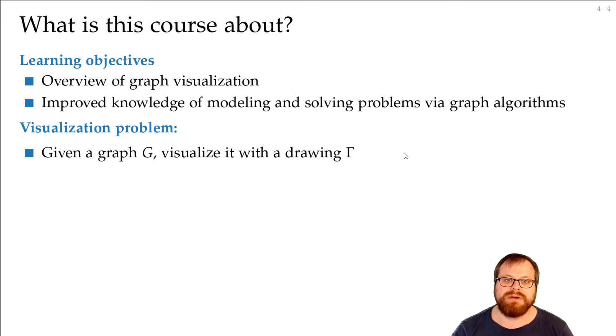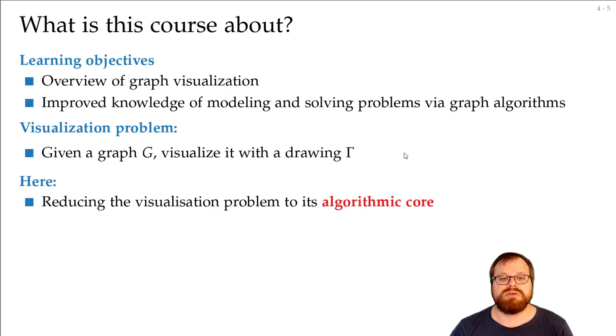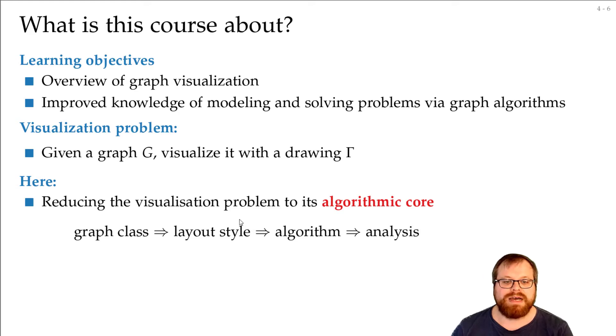This is not so clear. There are many different styles and many things you want to do. We want to have a look at 10, 11, 12 of them in this course. We want to reduce this visualization problem to the algorithmic core. We have some graph class, some specific graphs, we have some layout style, and then we want to find an algorithm that draws this graph class with this layout style.